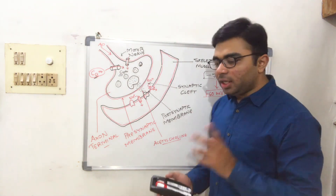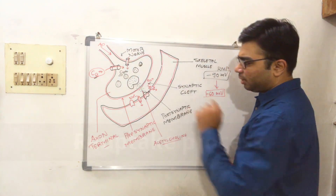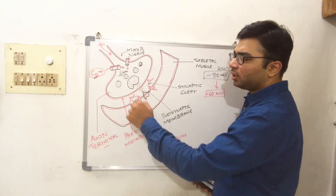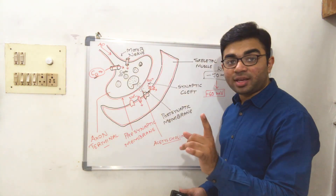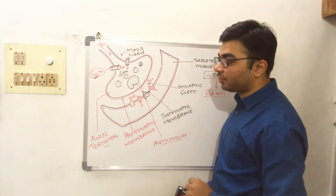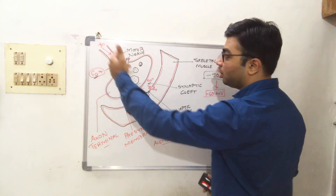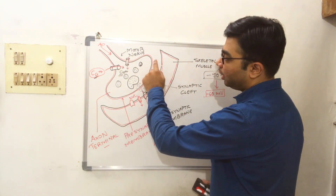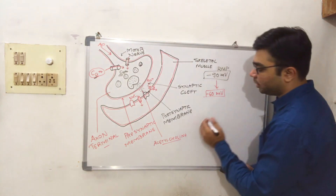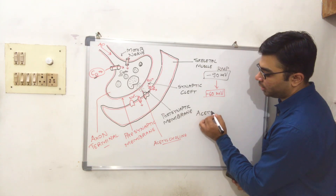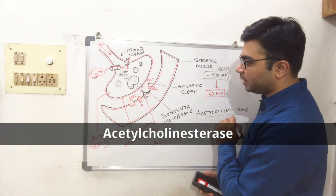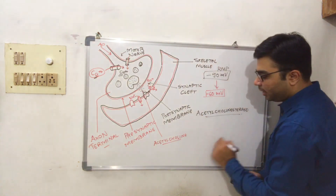Now comes the reuptake process — the last portion of this concept. After calcium and sodium ions enter and the channels close, the most important step is the degradation of acetylcholine inside the synaptic cleft. This must occur because when a new action potential arrives, the synaptic cleft should be completely clear. Acetylcholine is broken down by the enzyme acetylcholinesterase, which comes into the synaptic cleft and degrades the acetylcholine.